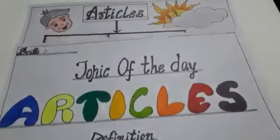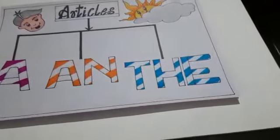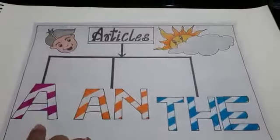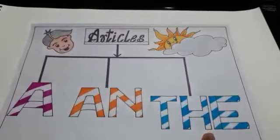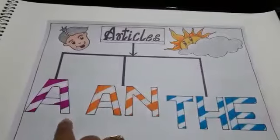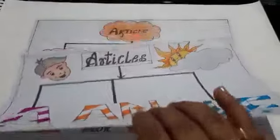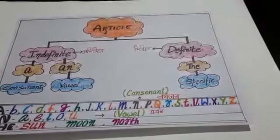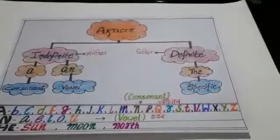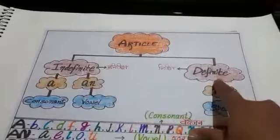Now, we come to the types of article. As you can see, there are three types of article. A, an, and the. Now, we come to the kinds of article. There are two kinds of article. One is indefinite. The other one is definite.